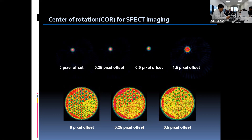The images on the bottom are reconstructed slices of a Jaszczak phantom image. Images obtained with 0.25 pixel offset error show slight degradation compared to those with no offset error. On the contrary, significant degradation is seen in the image with 0.5 pixel error. As we see from these examples, COR offset error causes a loss of reconstructed spatial resolution and contrast. In this case, correction for COR offset error must be done immediately.